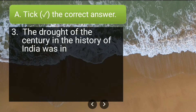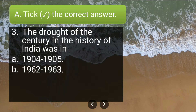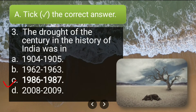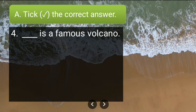Third question: the drought of the century in the history of India was in 1904-05, 1962-63, 1986-87, or 2008-2009? The correct answer is 1986-87, because it was in this year that India faced a major drought.